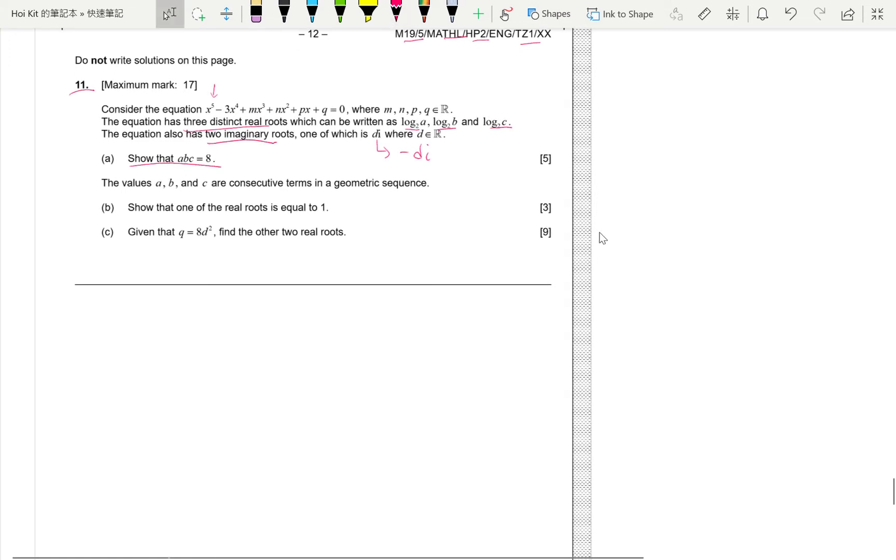So let's recall the sum of root, product of root. Since this is the power of 5, we have 5 roots, this is alpha 1. Let's say there are alpha 1, 2, 3, alpha 4, alpha 5. Then we know the sum of root is minus b over a, where b means the second coefficient. So it's minus minus 3 over a. a is the first coefficient, so it's 1 in here, so it's 3. Also, we know the product of roots, which is if we multiply them all, we'll get the last coefficient over a, so it's q over 1. Except the sine originate, so b is always minus, then positive, negative, positive, negative. So, the product of roots is minus q.